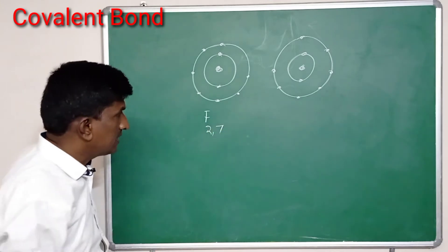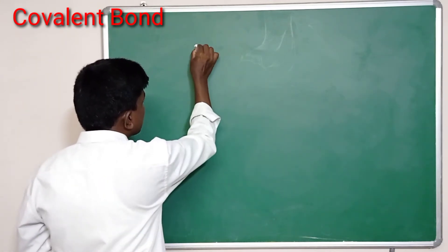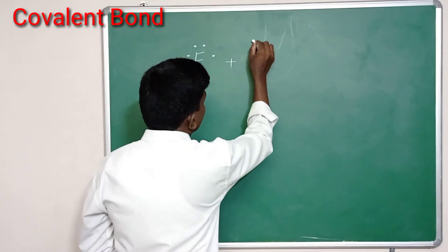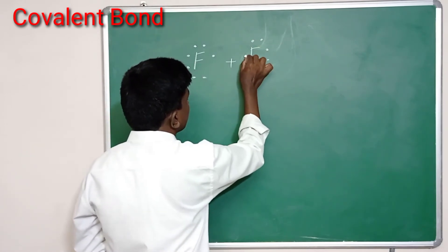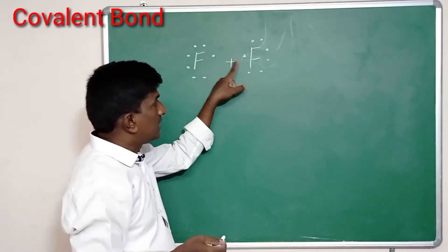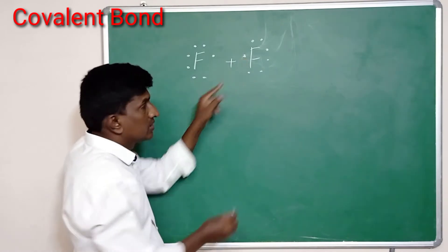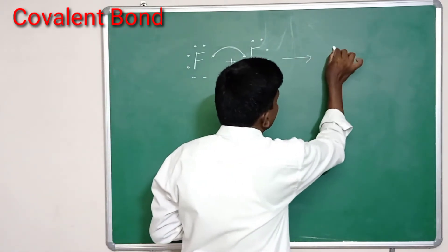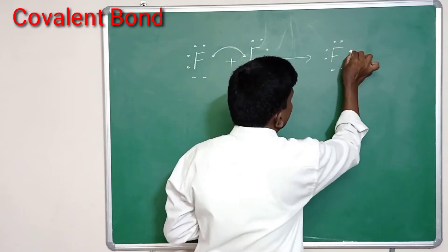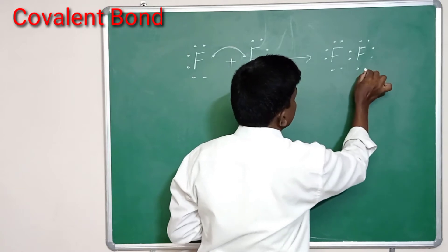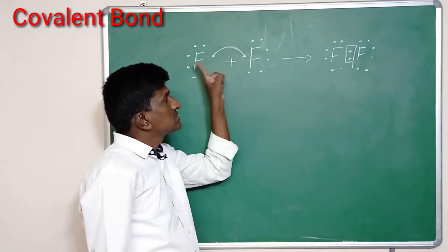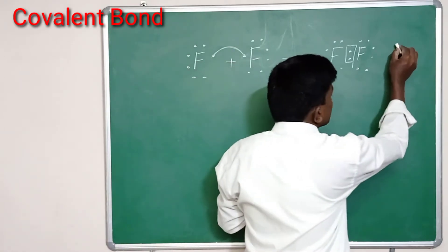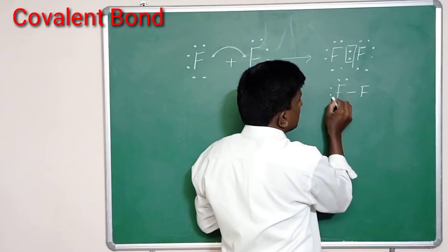When two fluorines come close to each other, fluorine has seven electrons in its outermost orbit. The first fluorine contributes one electron and the second fluorine also contributes one electron. These two electrons form a pair of electrons, and this pair of electrons is mutually shared by the two fluorines. This bond is called a covalent bond, and this sharing of one pair of electrons is denoted as a single bond.